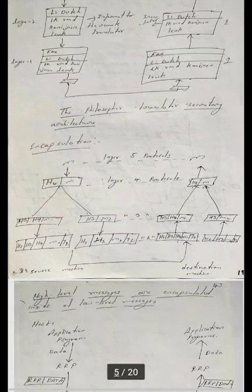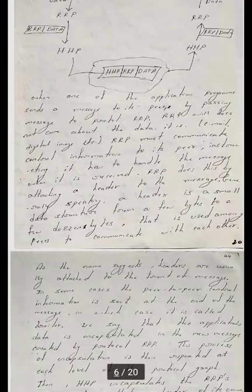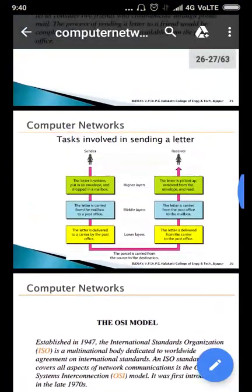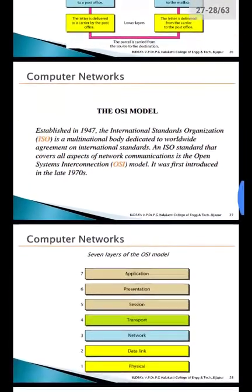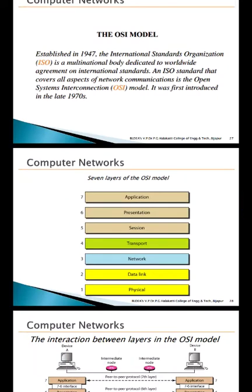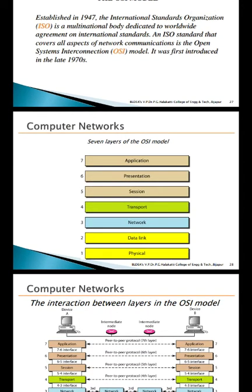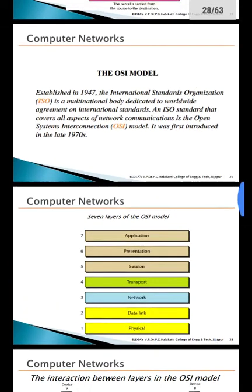This is how information is sent from one computer to another using layered architecture. Now we look at one specific architecture: the seven-layer ISO OSI model. The layers are: physical layer, data link layer, network layer, transport layer, session layer, presentation layer, and application layer. The ISO OSI model was established in 1947 by the International Standards Organization, a multinational body dedicated to worldwide agreement on international standards. OSI stands for Open System Interconnection.